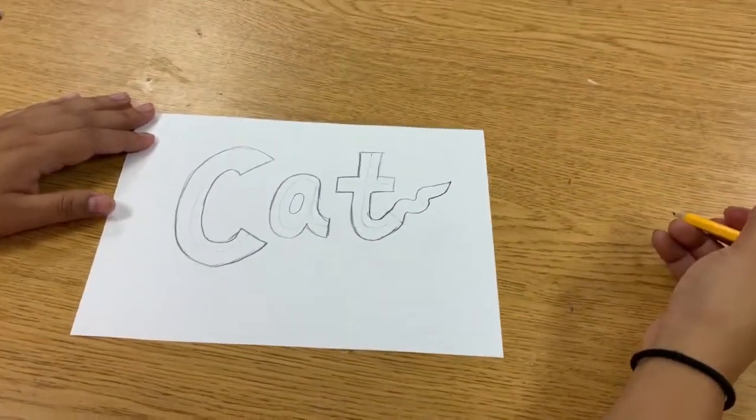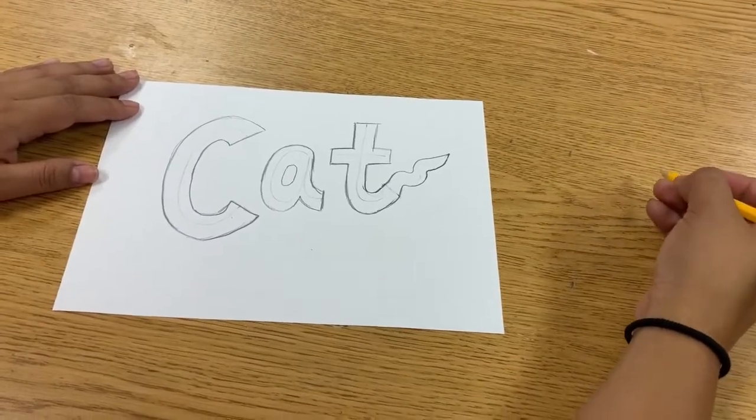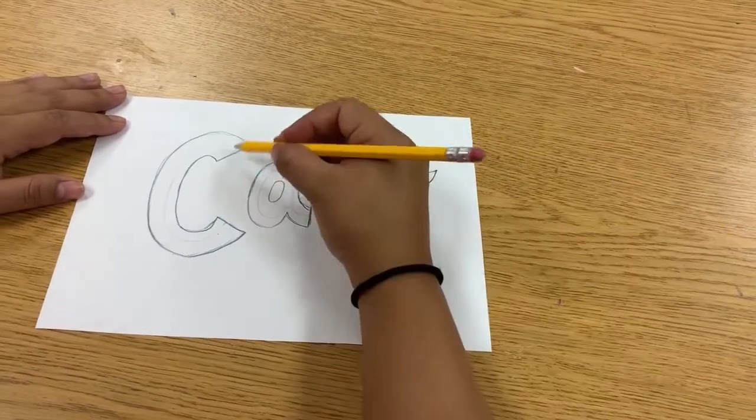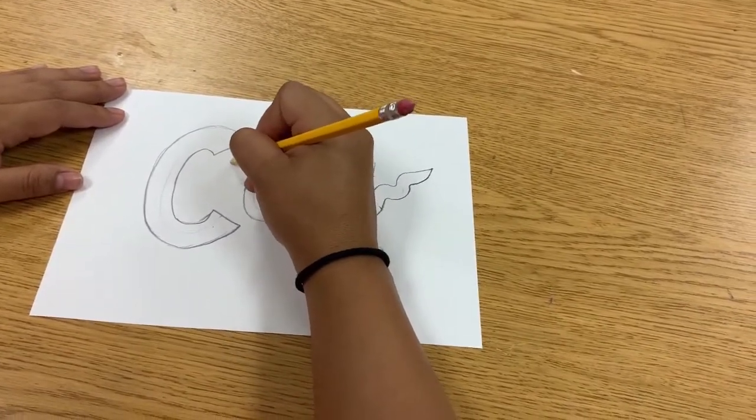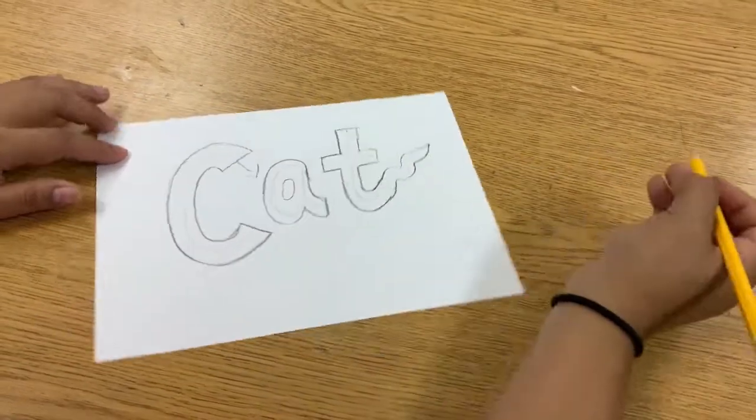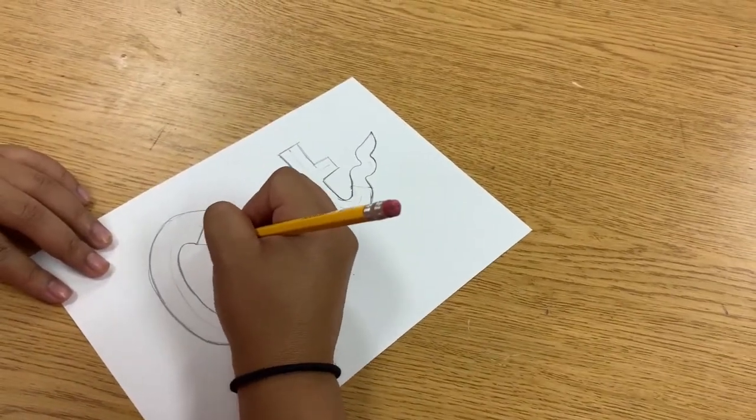Now, you can do this to any part of your letter. So if I wanted to add an arrow to this part of my C, again, I would just draw my line and then draw the arrow. So again, starting from the corners, come up.